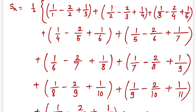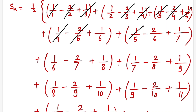Now let's cancel the terms. The 1/1 and -2/2 (= -1) cancel. Then 1/3 and -2·(1/3) cancel. Again 1/4 + 1/4 - 2/4 cancel; 1/5 + 1/5 - 2/5 cancel; 1/6 + 1/6 - 2/6 cancel; and -2/7 cancels with 1/7 + 1/7. The terms are getting cancelled throughout — this is a telescoping series.